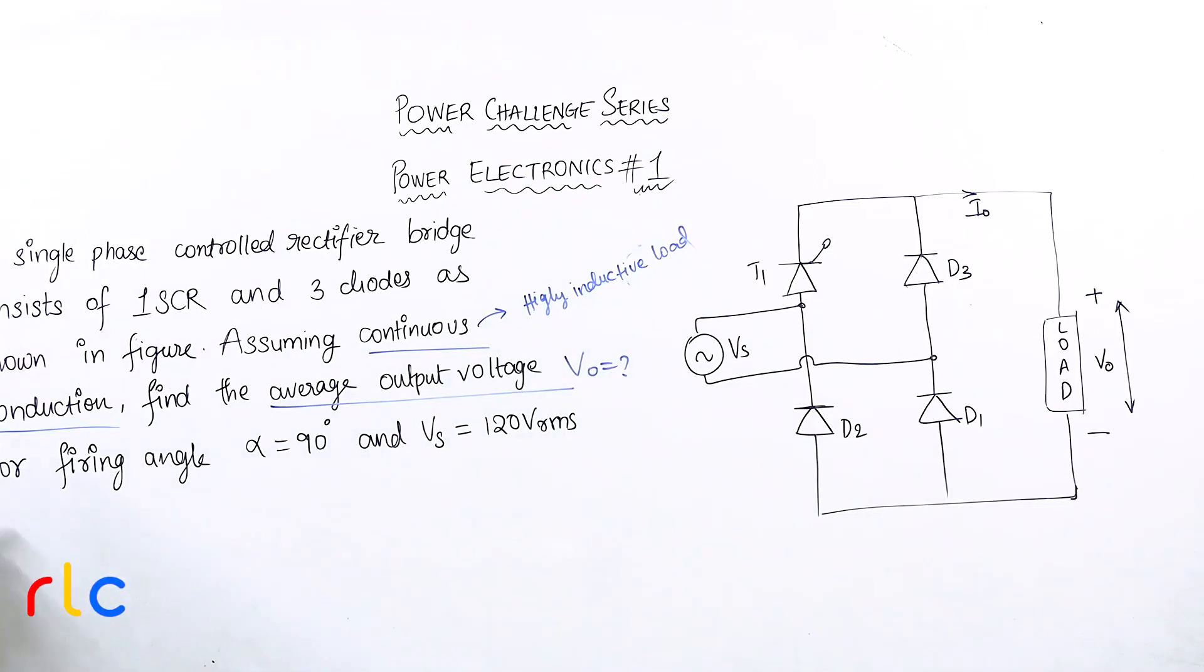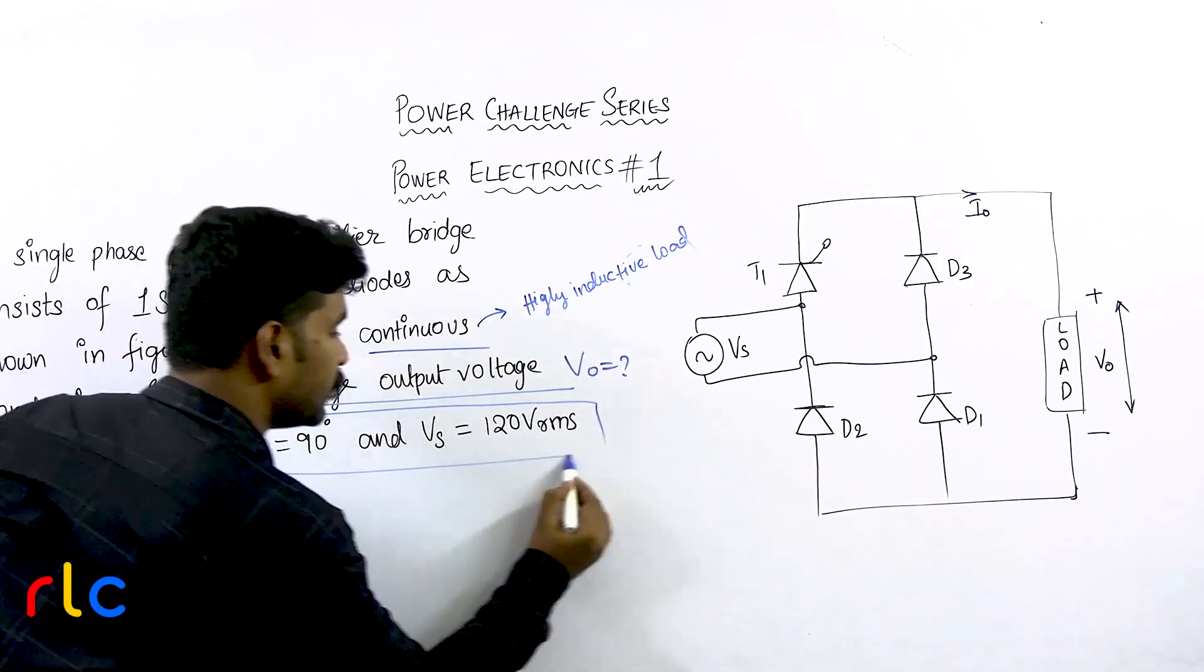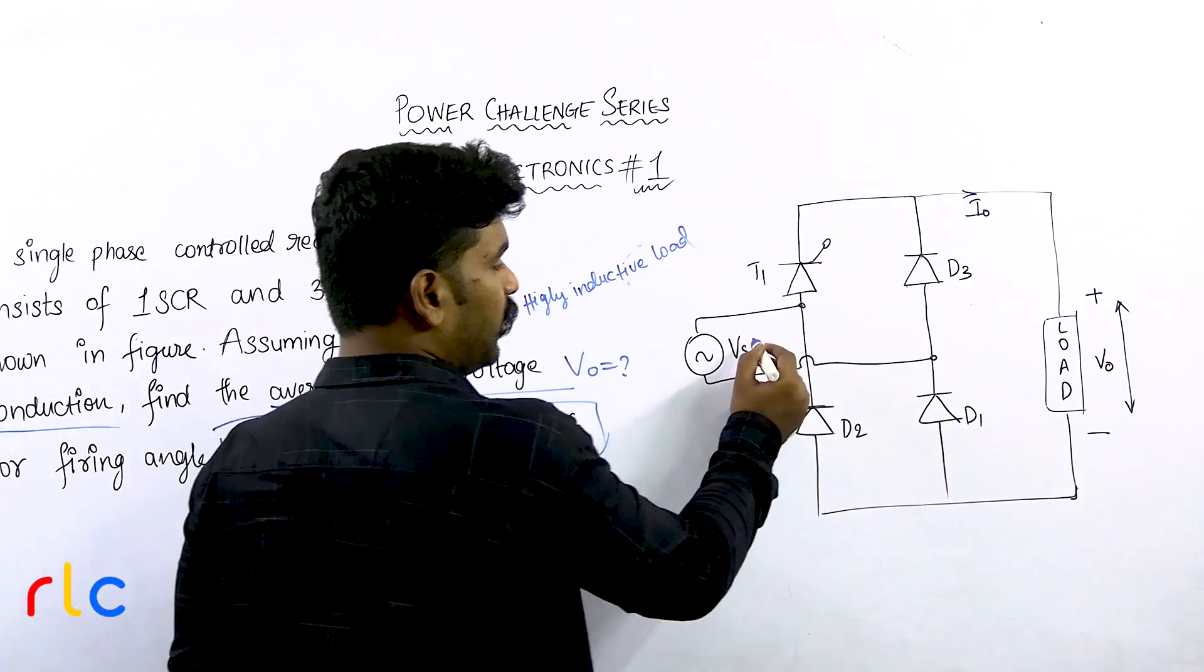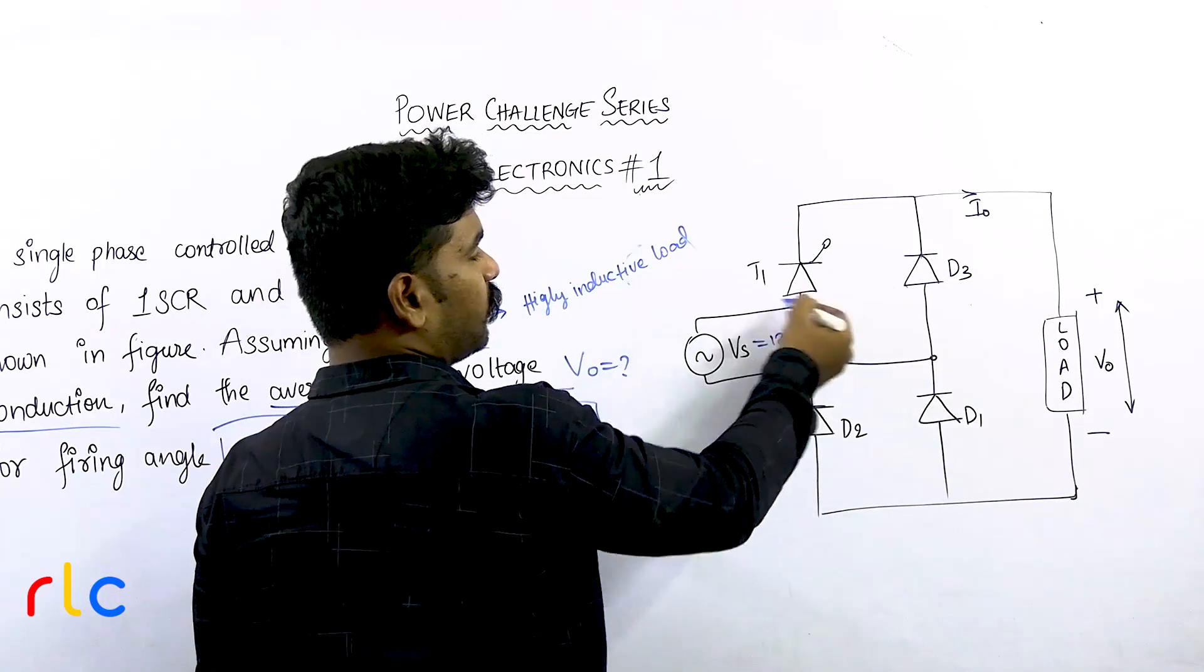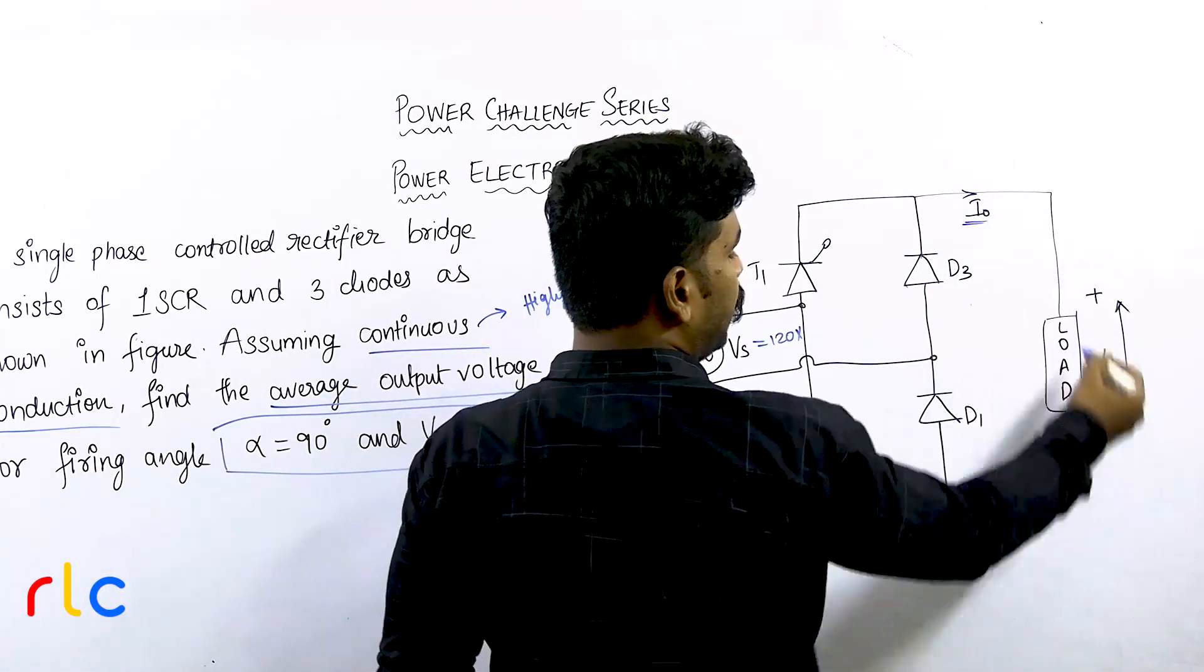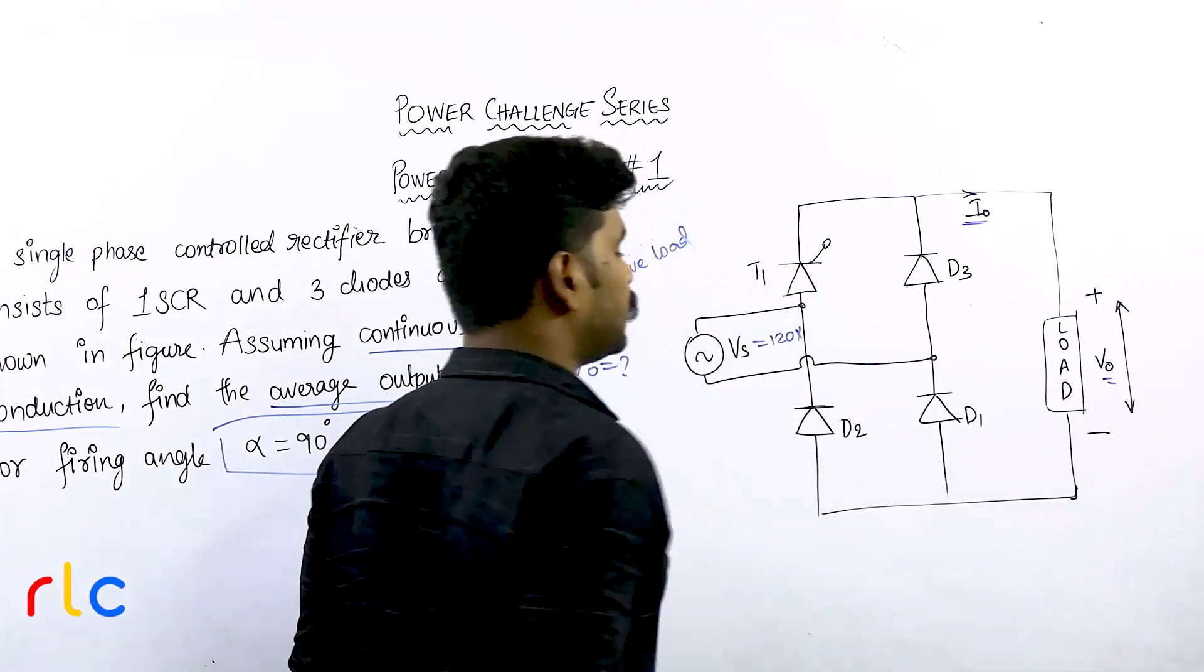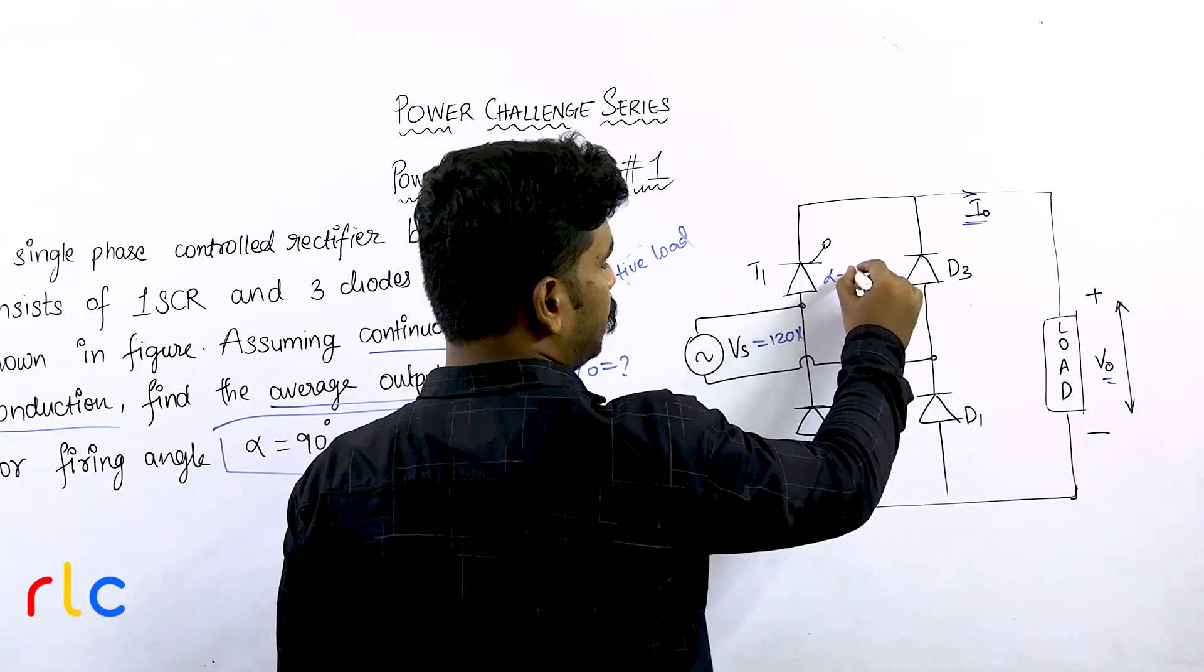You have to find out what is the average output voltage for the given conditions, that is firing angle α=90 degrees and the source voltage Vs=120 volts RMS. Look at the circuit diagram. Here is your source voltage 120 volts RMS, here is the first thyristor, and the remaining four are diodes. The current I_naught is going into this highly inductive load, and the voltage average across the load is V_naught with firing angle of 90 degrees.